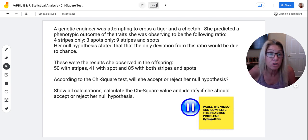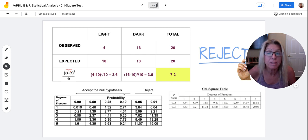Her null hypothesis stated that the only deviation from this ratio would be due to chance. Now I'm going to tell you, if it's due to chance, then it's going to be in this accepting the null hypothesis range. Now, first of all, let's just pre-discuss what would be the degrees of freedom.